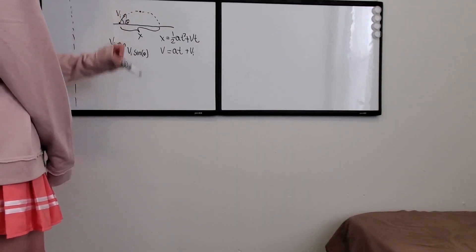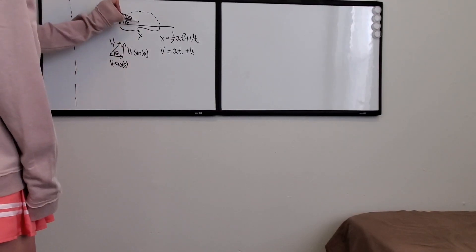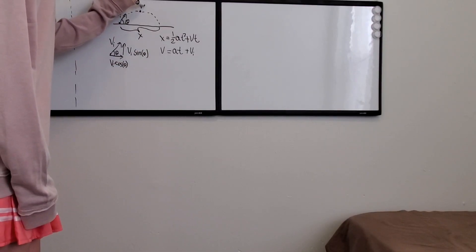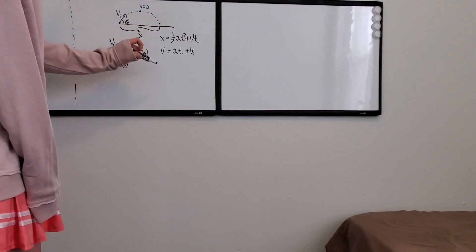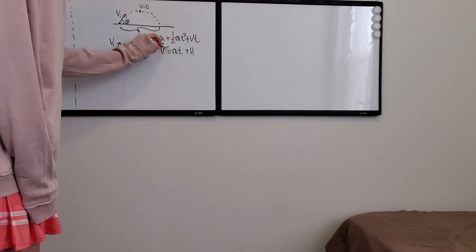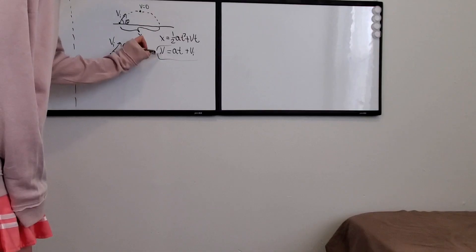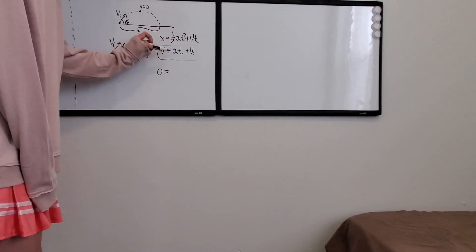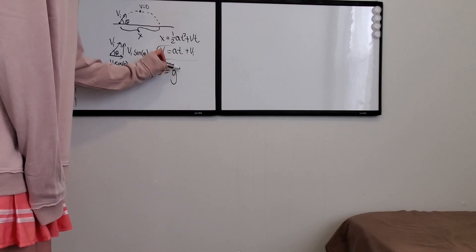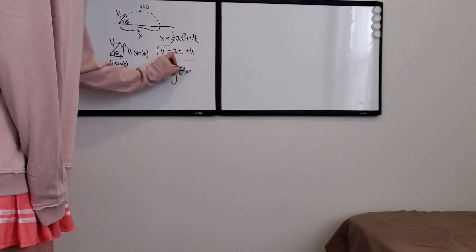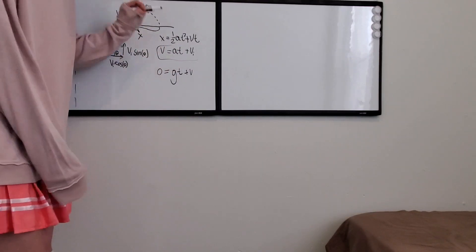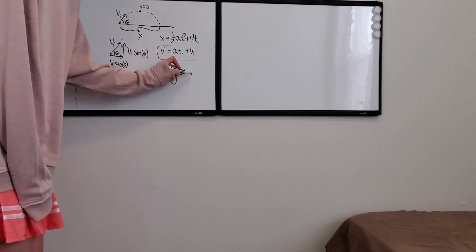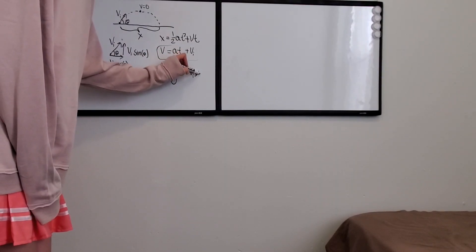I'm going to call this distance x. In order to figure out how long it's in the air, we're going to use the fact that it stops vertically at the top — here it has a velocity equal to zero. We're going to use the velocity equation and plug in that velocity zero is equal to the acceleration times time. Our acceleration is going to be gravity, so I'll call it g. Then plus our initial velocity, and since we're only solving for the up-down part, we only need the up-down part of our velocity: velocity initial times sine theta.